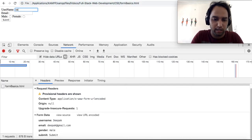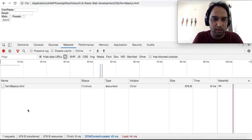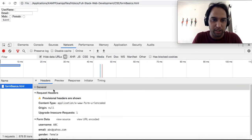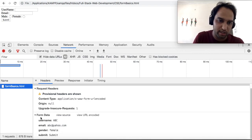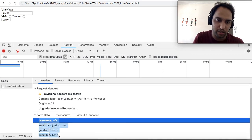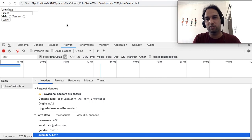If you want to submit more data like ABC and abc@yahoo.com as email, submit the data, click on form basics, go to the headers, and you can see here is the data. So in this way you can see that POST data is submitted in another way than we have done in GET method.